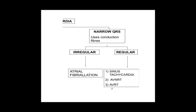In supraventricular tachycardias, the characteristics are of course a tachycardia, but the QRS complexes will be narrow. This reflects the fact that the normal conduction fibers of the heart are being used. You can divide SVTs broadly into irregular and regular. When we think about irregular tachycardias, the most common thing is atrial fibrillation — there's another podcast on the website about this. What we are going to speak about are the two particular types of regular narrow complex tachycardia.